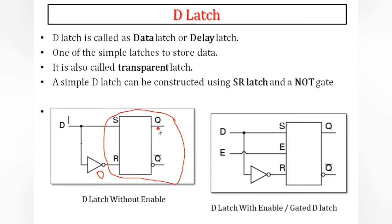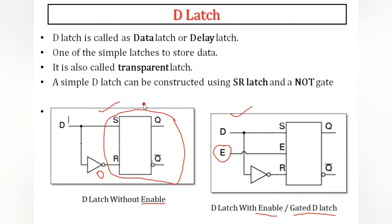There are two types of D latches: first is without enable pin, and second is with enable. The D latch with enable is also called a gated D latch. D latch is also called a data latch or delay latch, and it is known as a transparent latch — I will prove this in the next slide.